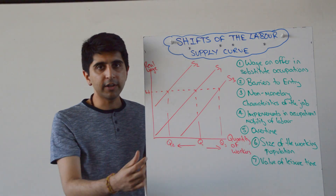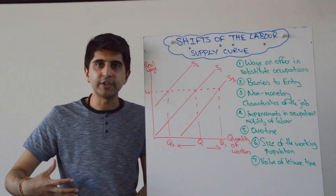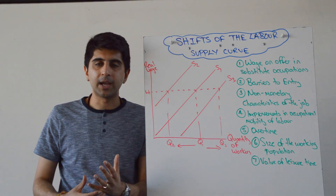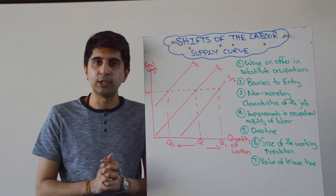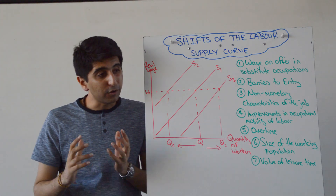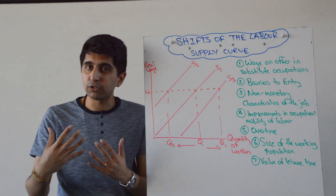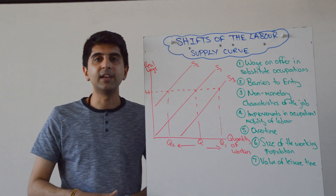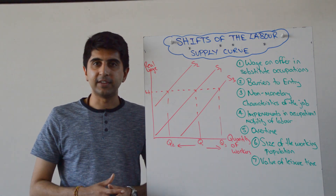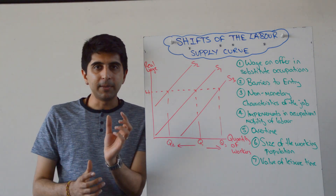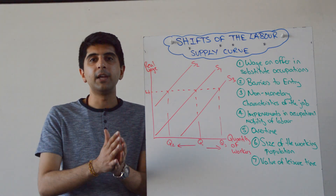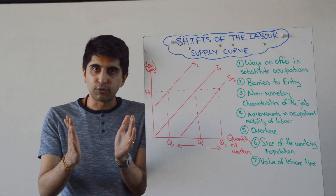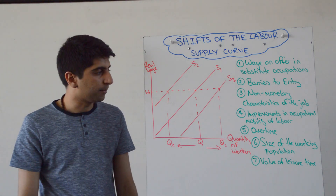The ability of workers to choose overtime, or at least have the option to get overtime, will also increase the supply of labour. A lot of workers value that option — if they need a bit of extra income, knowing they can work overtime and get paid for it is a big benefit. So the ability to be flexible with overtime will shift the supply of labour to the right in a given profession.